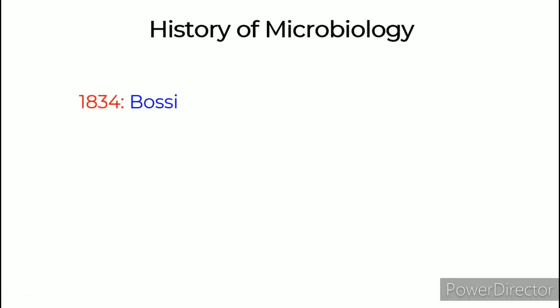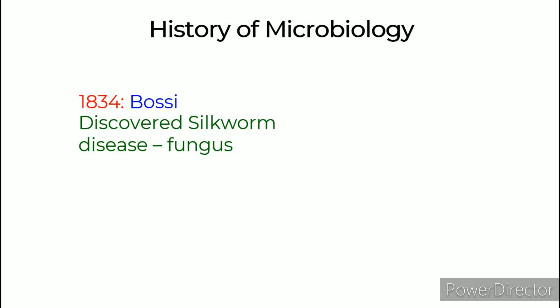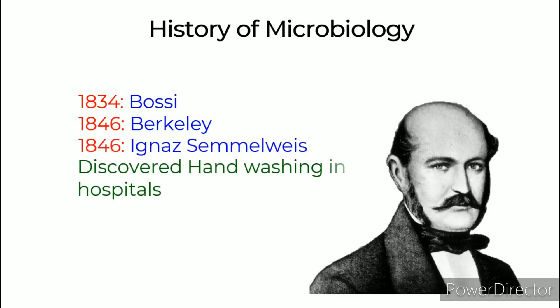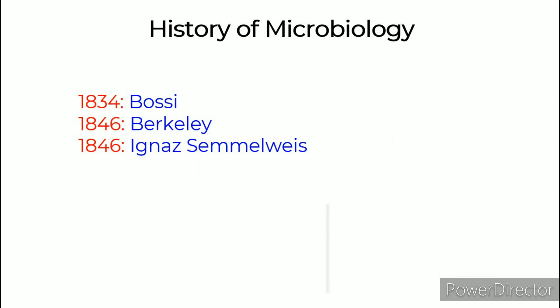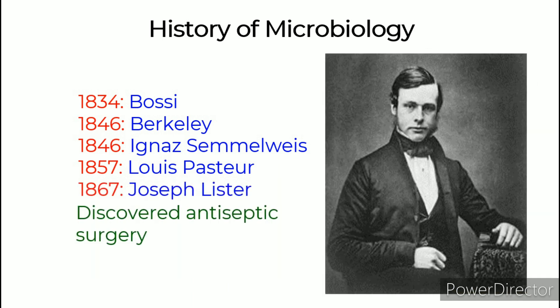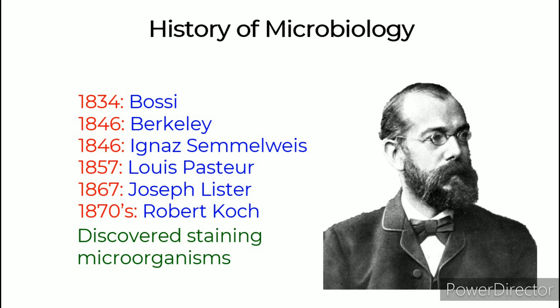Germ theory of disease timeline: 1834 — Bassi discovered silkworm disease caused by fungus. 1846 — Berkeley discovered potato blight, fungus. 1846 — Ignaz Semmelweis discovered importance of hand washing in hospitals. 1857 — Louis Pasteur discovered bacteria cause diseases in wine. 1867 — Joseph Lister discovered antiseptic surgery. 1870 — Robert Koch discovered staining of microorganisms.